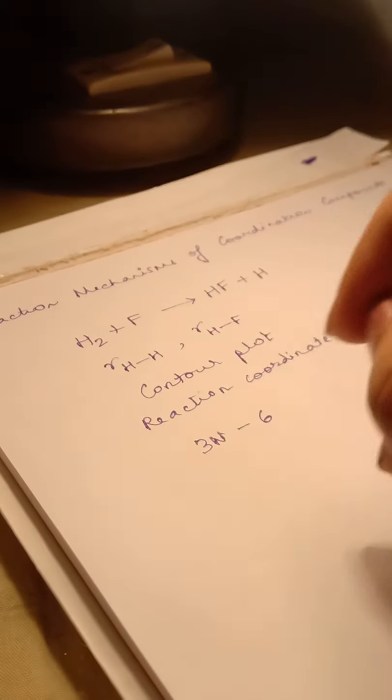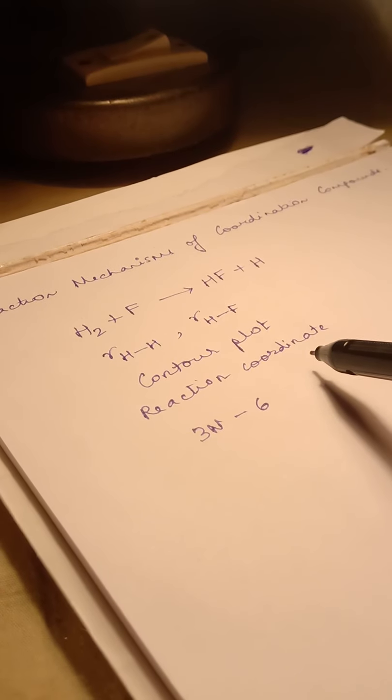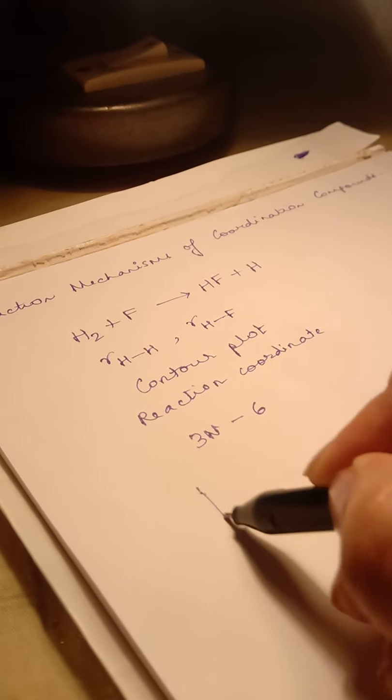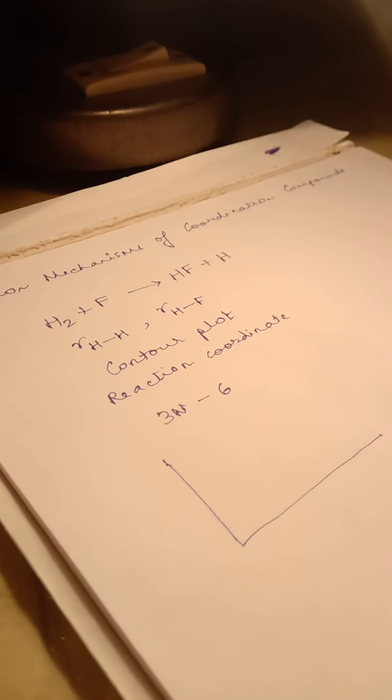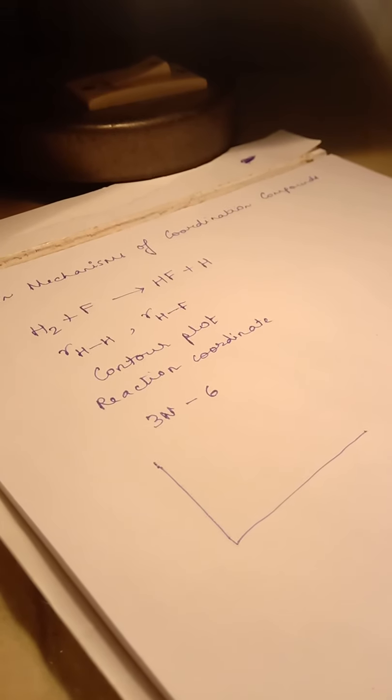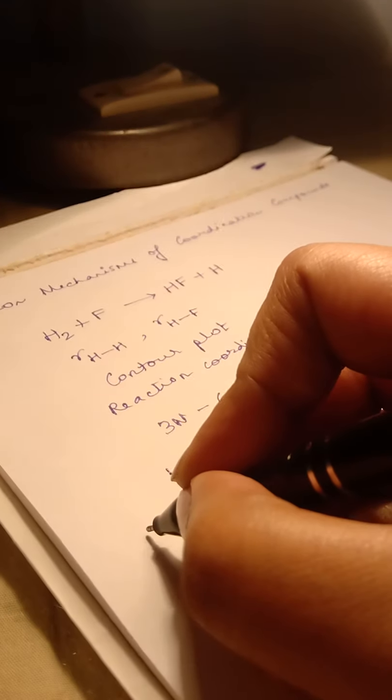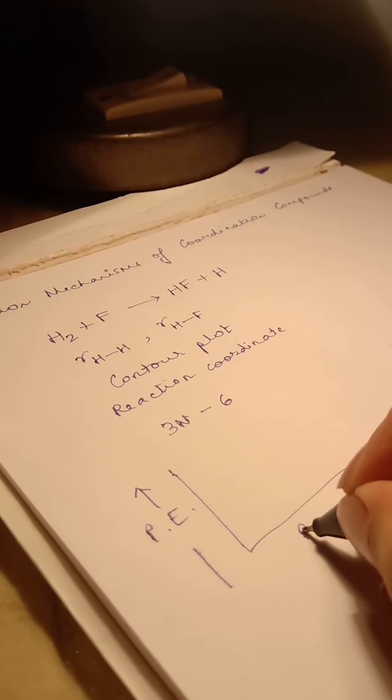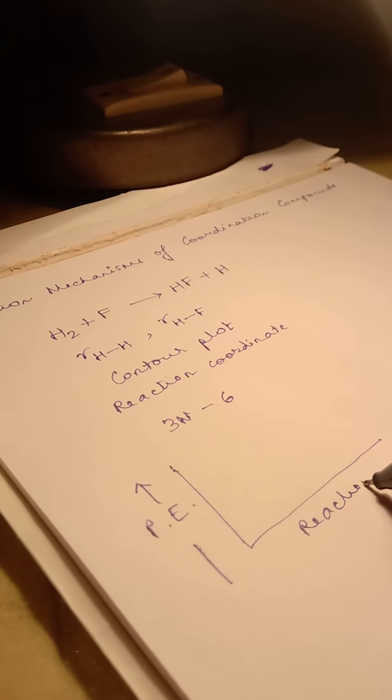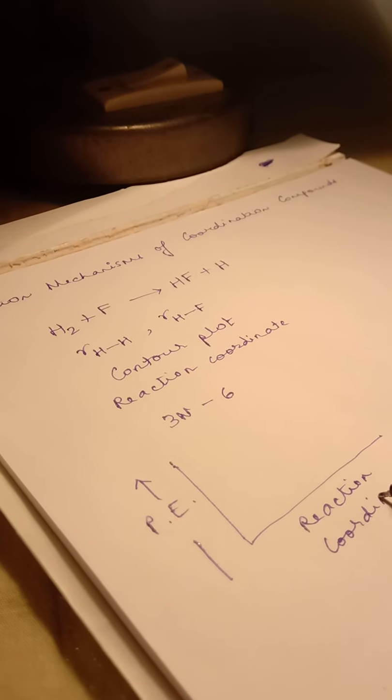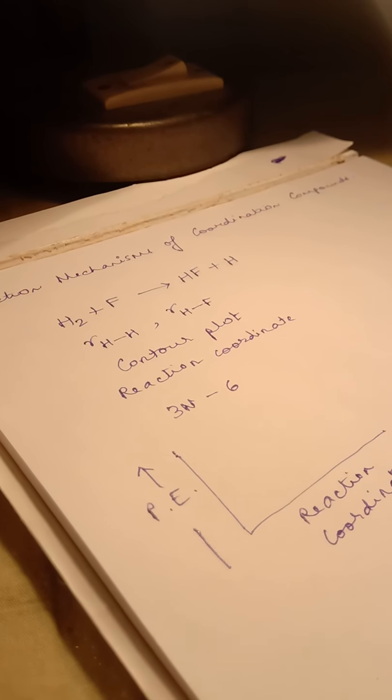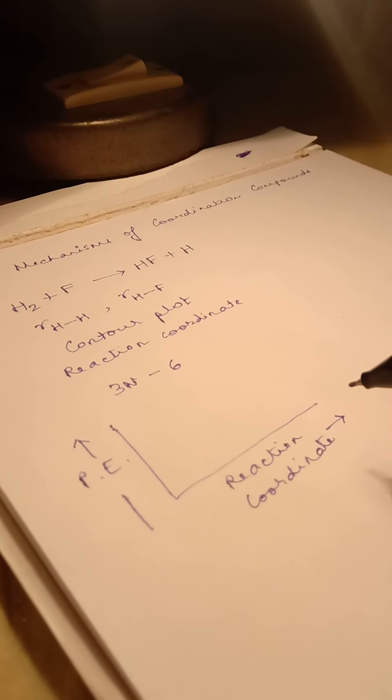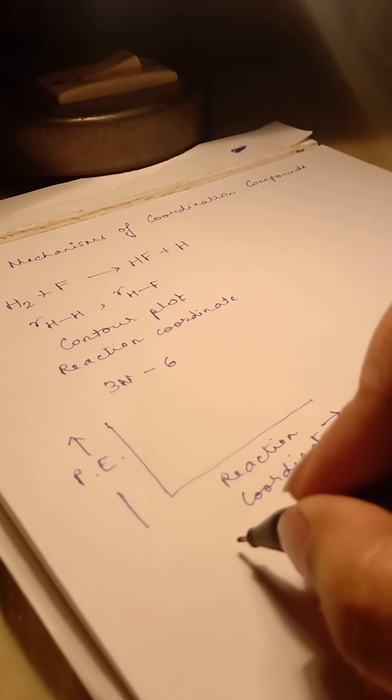Now the next thing that one needs to know is we are clear about what the reaction coordinate is. This plot of potential energy versus reaction coordinate is called the reaction profile. This is essentially a 2D diagram which can be very easily used to monitor the progress of the reaction.